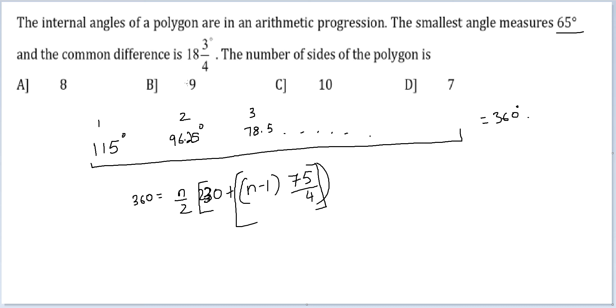So I'm putting n equal to 9. Let's see: 720 equals 9 times... [2 times 115 plus 8...]